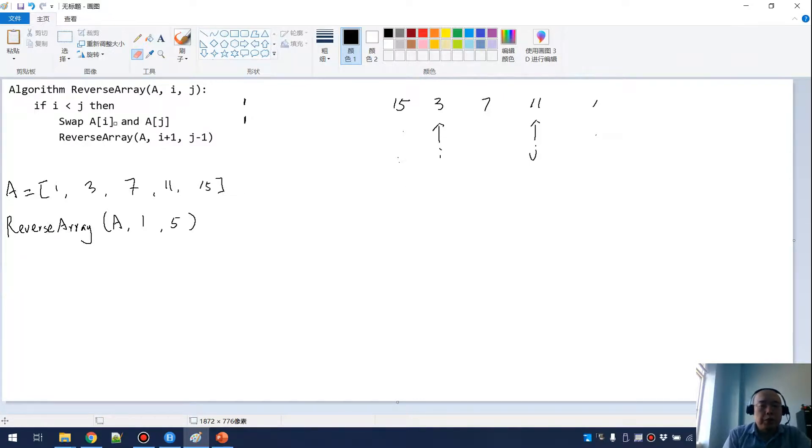So this will be the first recursive call. We're moving the I and J both towards the middle, and then we want to check this condition again. I smaller than J, so yes. So we want to swap the 3 and 11 again. Let me swap the 11 and 3. After that, we want to do I up by 1 and J down by 1. So eventually you will have I here and J here again.